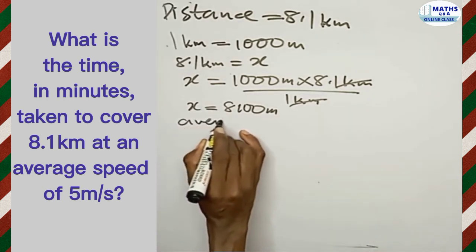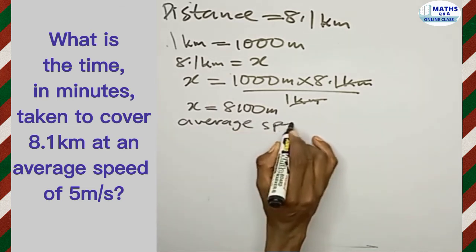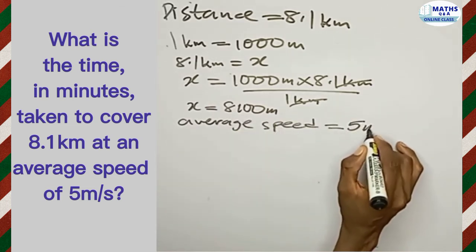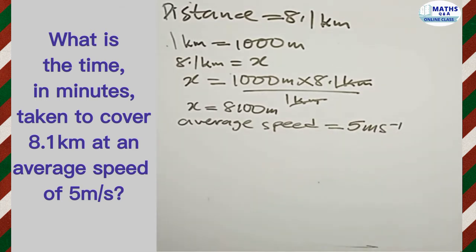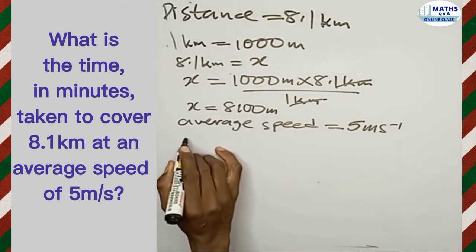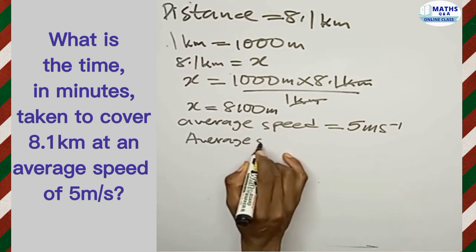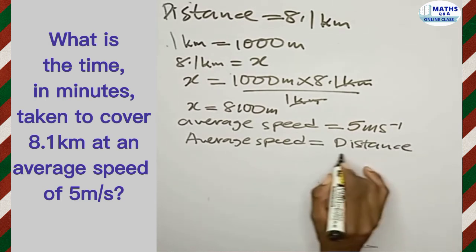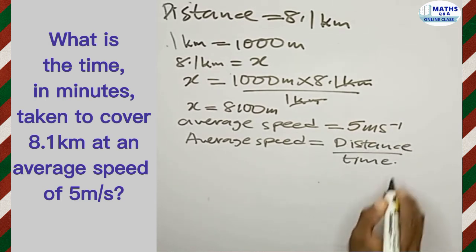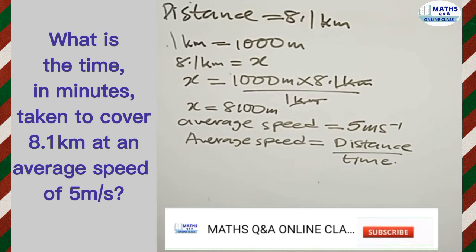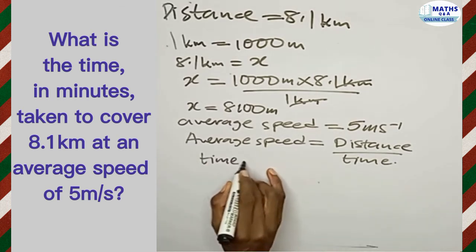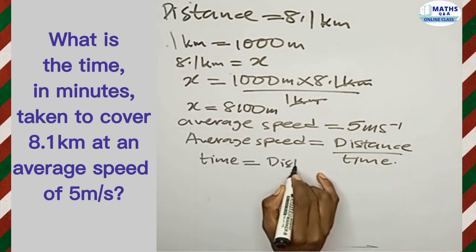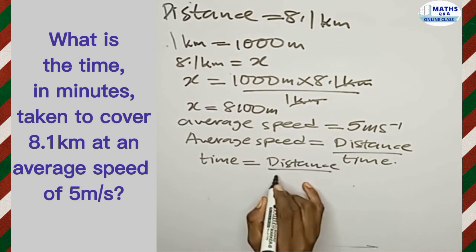We were given the average speed, which is equal to five meters per second. To find the time it took to cover such a distance, we need the formula for average speed: average speed is equal to the distance covered divided by time taken. If we make time the subject, then time equals the distance covered divided by the average speed.